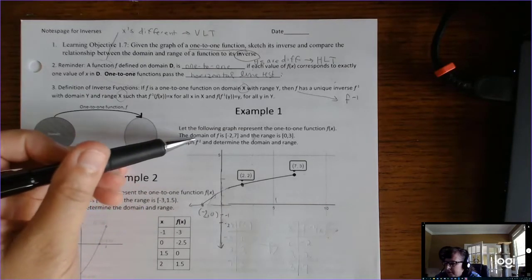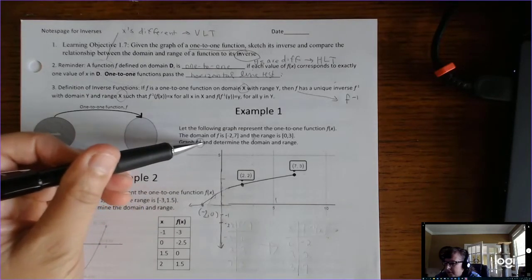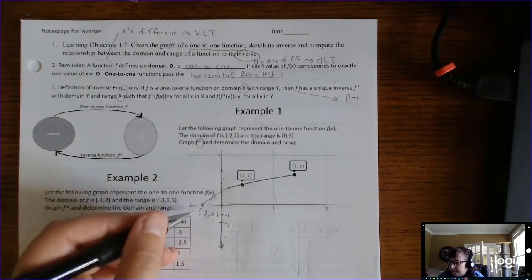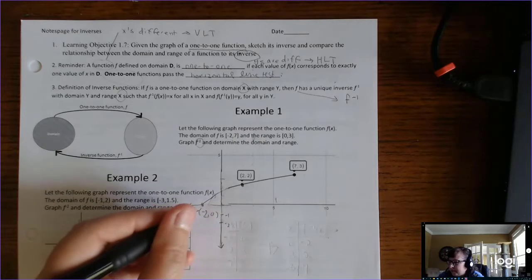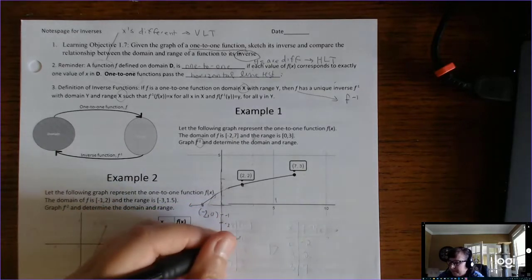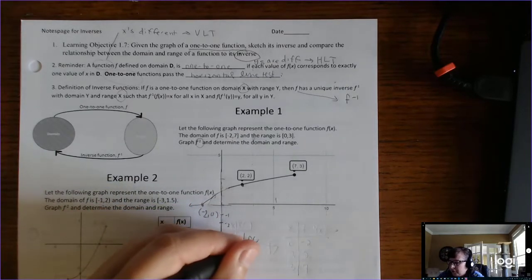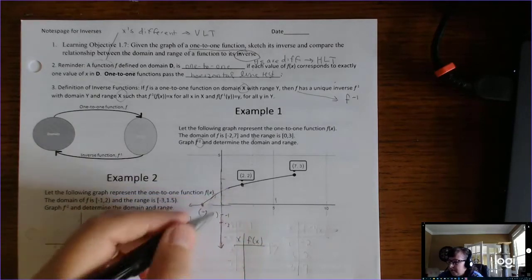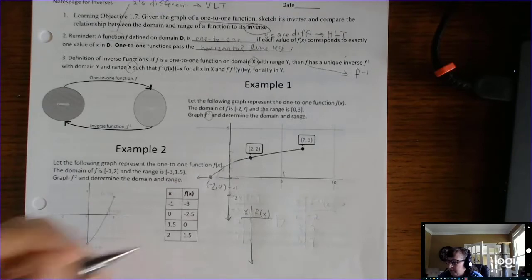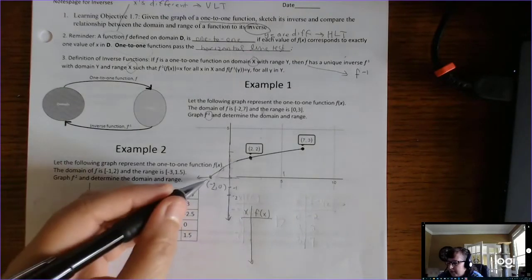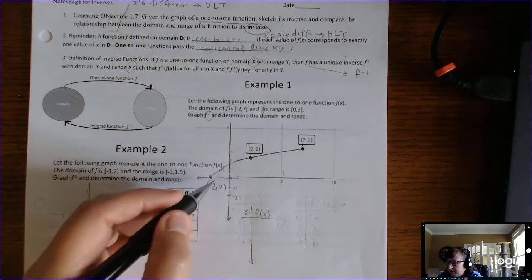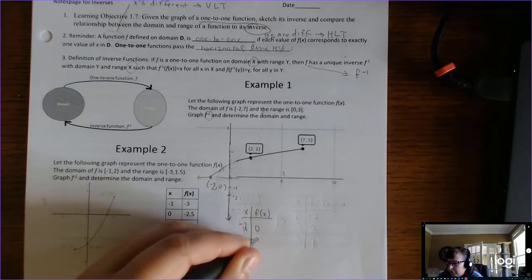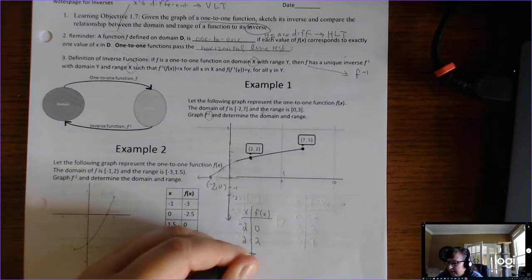It says graph f to the negative 1 — that means graph the inverse and determine the domain and range. So here's what you want to do: pull off a few ordered pairs from the graph and write them down. There are an infinite amount of ordered pairs, but let's just use the three that are given: negative 2, 0; then 2, 2; and 7, 3.